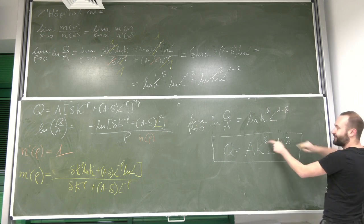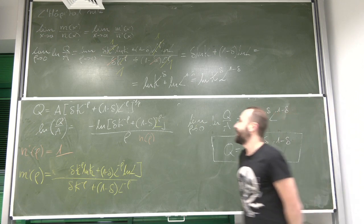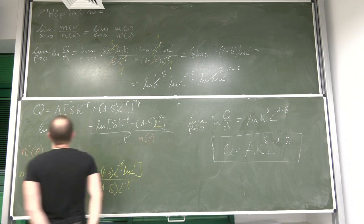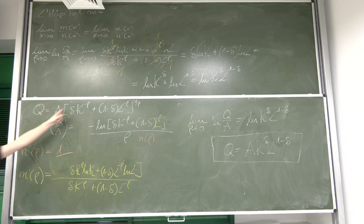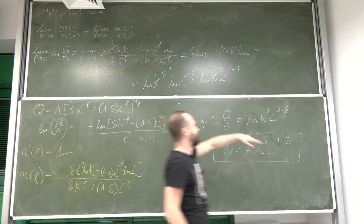And look, what we have proven now is that Cobb-Douglas production function with constant returns to scale is a special case of CES production function with rho going to zero.